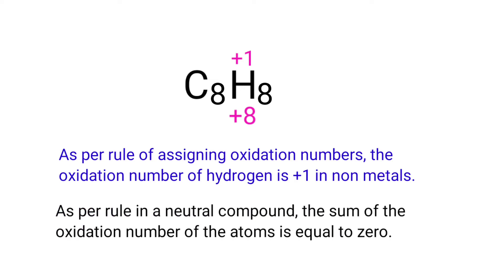As per rule in a neutral compound, the sum of the oxidation number of the atoms is equal to 0. So the numbers along the bottom must add up to 0. So the number under C8 must be -8.